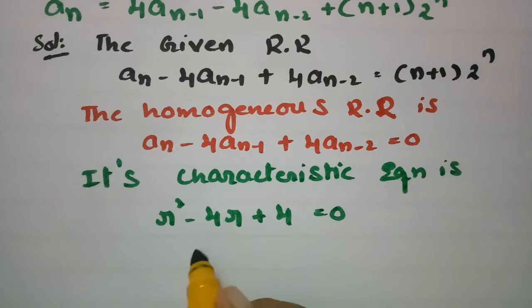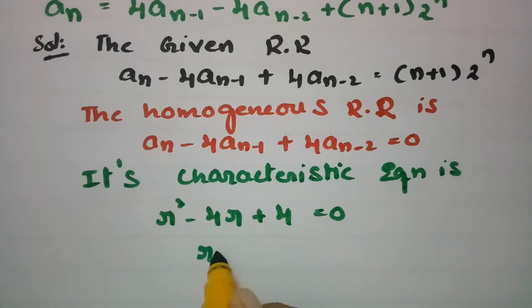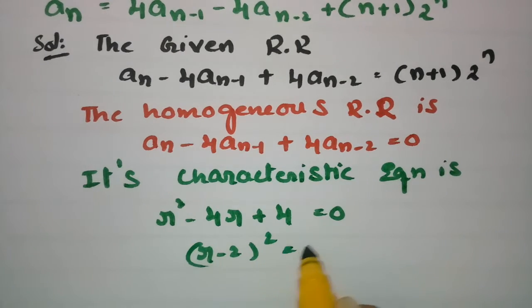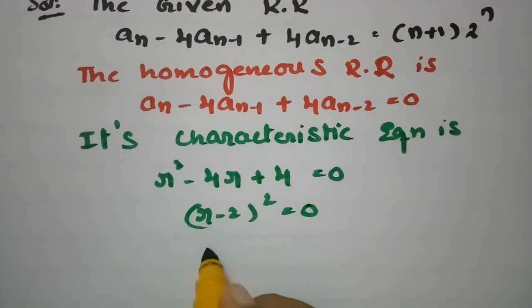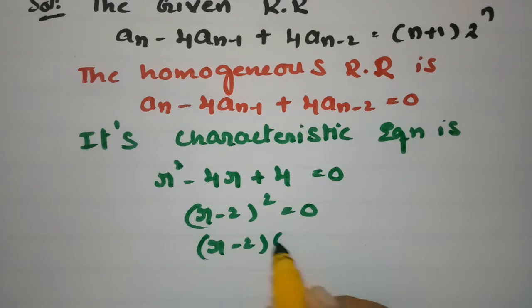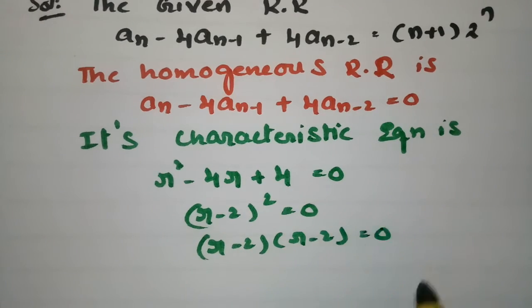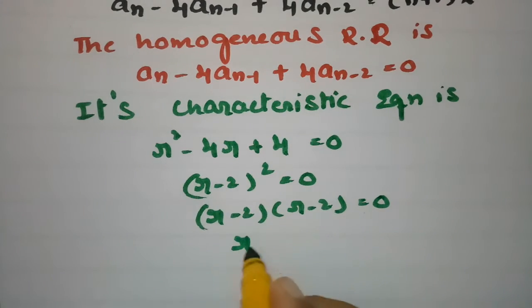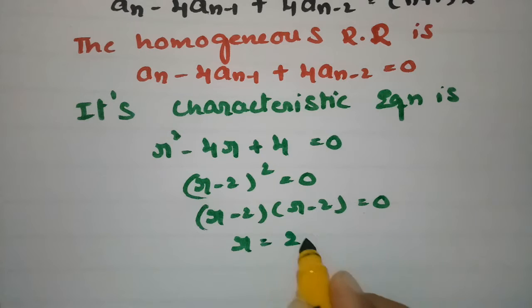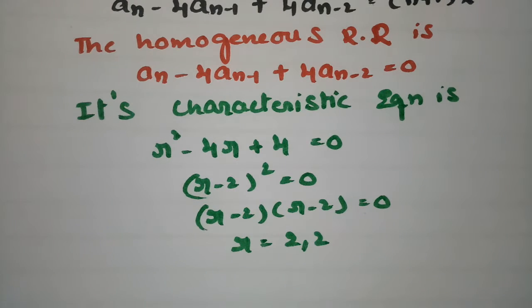Factoring the characteristic equation: (R − 2)² = 0, which gives (R − 2)(R − 2) = 0. So we get the roots as 2, 2. These are equal roots.